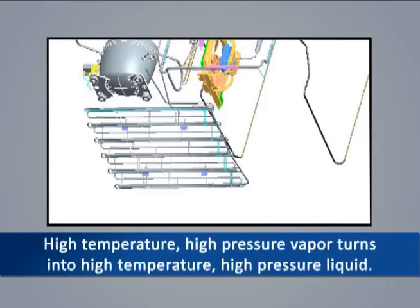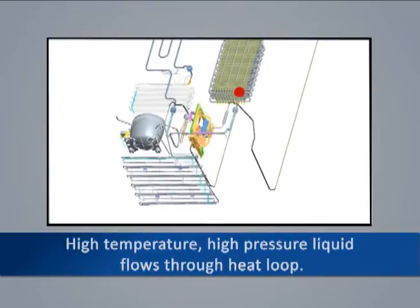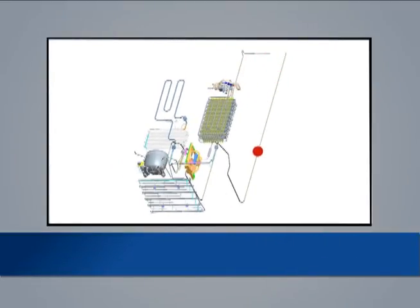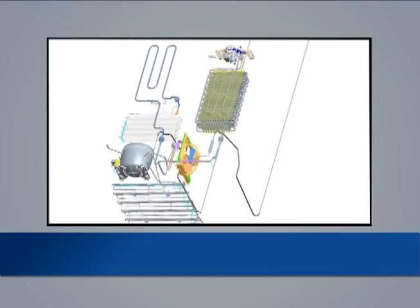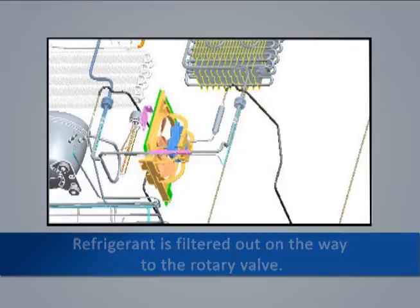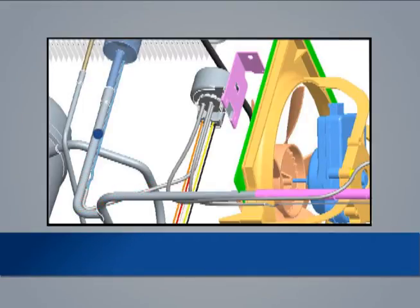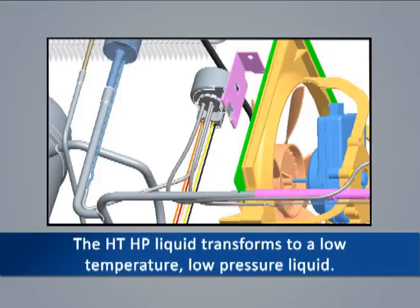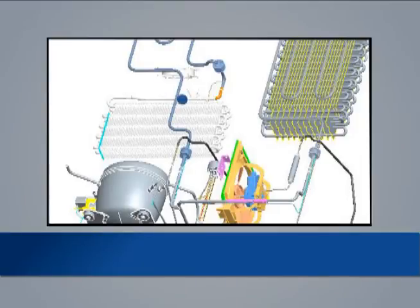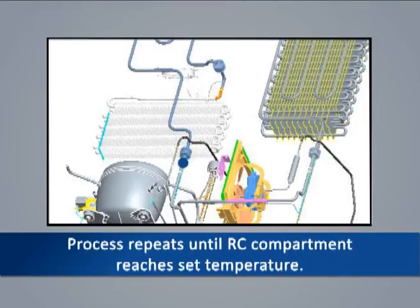The high temperature, high pressure vapor flowing through the condenser begins to give off heat and changes state to a high temperature, high pressure liquid. This high temperature, high pressure liquid then flows through the heat loop routed around the perimeter of the freezer compartment. The heat given off by the refrigerant is used to warm the exterior cabinet skin and reduce the possibility of condensation forming. The output of the heat loop is connected to the filter dryer where any impurities or moisture in the refrigerant are filtered out on its way to the rotary valve. The high temperature, high pressure liquid passes through the rotary valve into the RC evaporator cap tube. When the refrigerant sprays out of the cap tube into the larger evaporator tubing, the high temperature, high pressure liquid transforms to a low temperature, low pressure liquid. As the low temperature, low pressure liquid passes through the evaporator, it absorbs heat and another change of state takes place to a low temperature, low pressure vapor. This vapor continues through the suction line to the compressor where it is again compressed and the process continues.